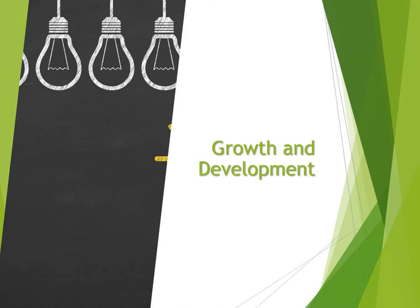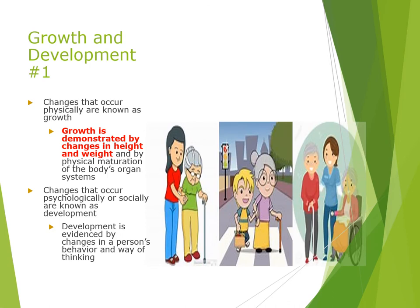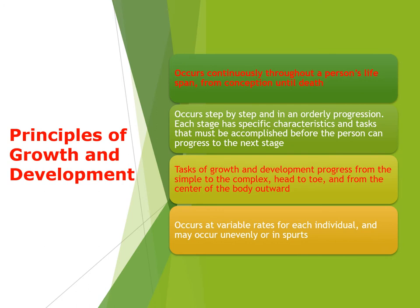Growth and development: changes that occur physically are known as growth, demonstrated by changes in height, weight, and physical maturation of the body's organ systems. Changes that occur psychologically or socially are known as development, evidenced by changes in a person's behavior and way of thinking.